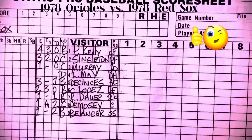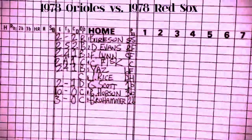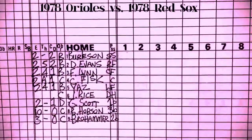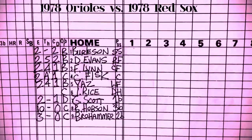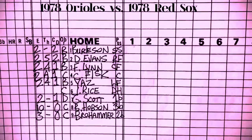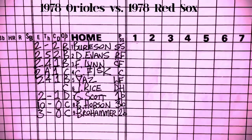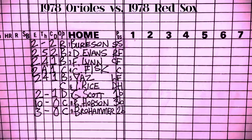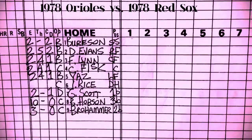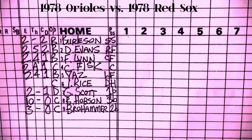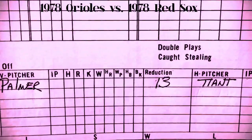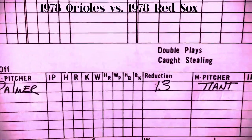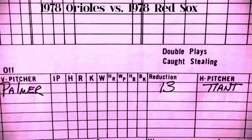Now the Red Sox lineup: Burleson at short, Evans in right field, Freddie Lynn in center, Carlton Fisk at catcher, Yaz in left, Jim Rice at DH, George Scott at first base, Butch Hobson at third, Brohammer at second. Today's pitching matchup is Jim Palmer for the 1978 Orioles and Luis Tiant for the 1978 Red Sox.